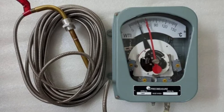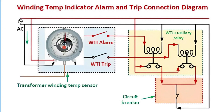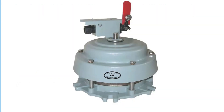Next is the winding temperature trip relay. This relay functions much like the oil temperature trip relay, but instead keeps a vigilant eye on the winding temperature. It takes action when the temperature spikes beyond a set limit, ensuring the transformer is de-energized to prevent potential damage. The pressure relief valve, installed directly on the transformer, plays a crucial role in preventing tank explosions by releasing internal pressure when it surpasses a preset limit.